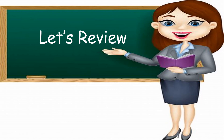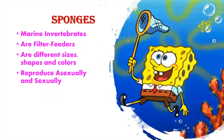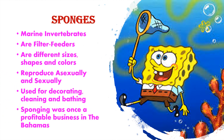Now let's take a look back over our lesson. Remember these simple things about a natural sponge: sponges are marine invertebrates; they are filter feeders; they come in a variety of sizes, shapes, and colors; sponges can reproduce asexually and sexually; they can regenerate; sponges have a variety of uses — some can be used for decorating, cleaning, and bathing; and sponging was once a profitable business in the Bahamas.